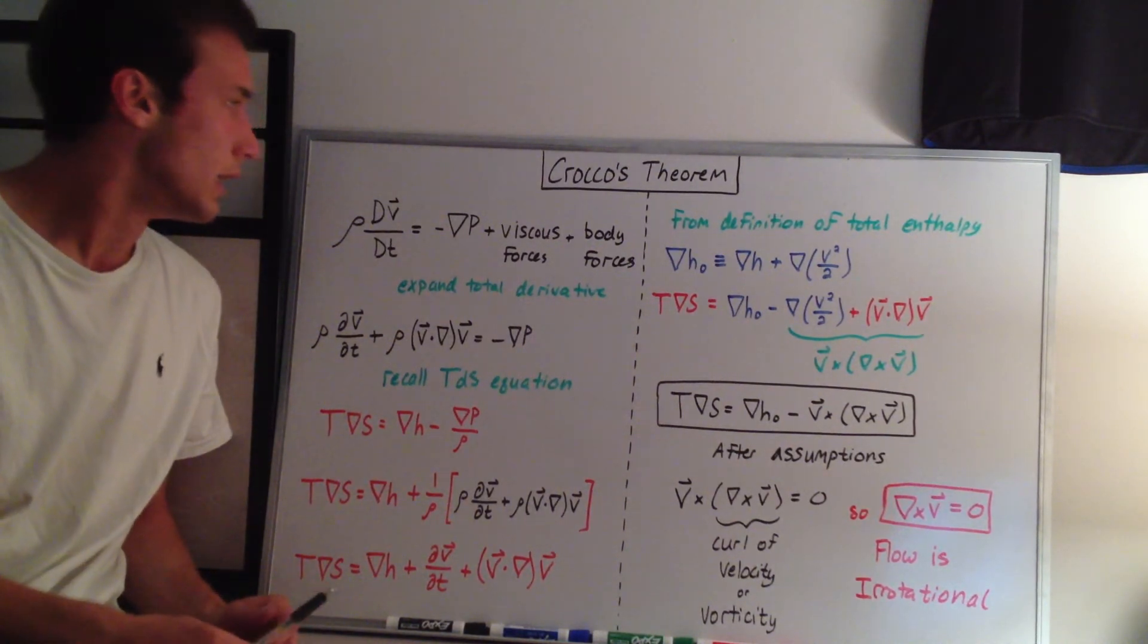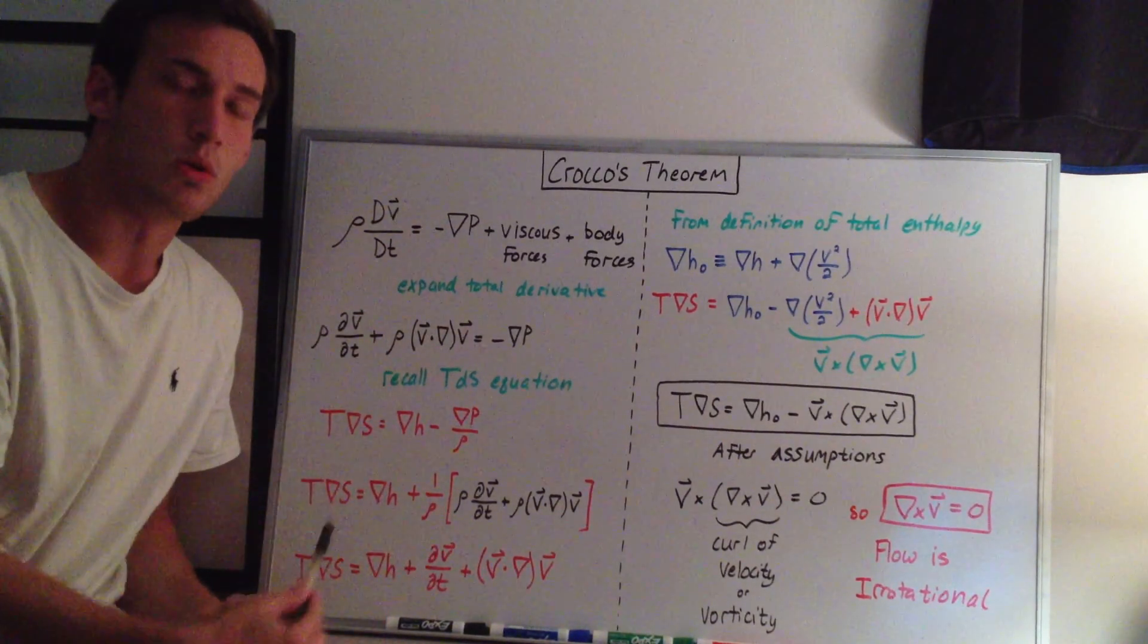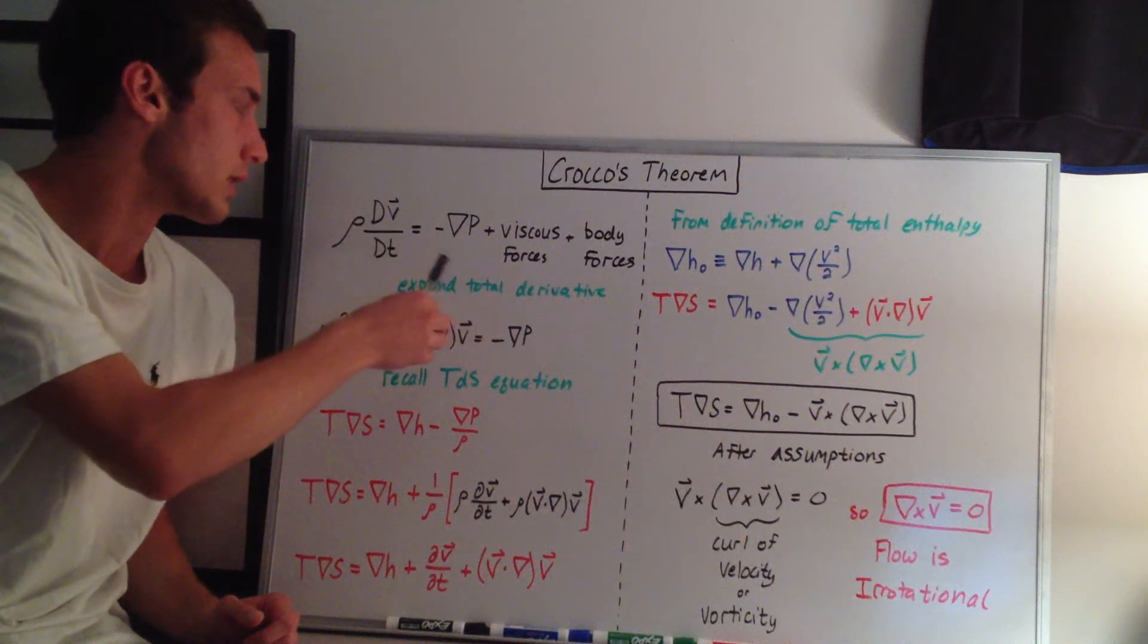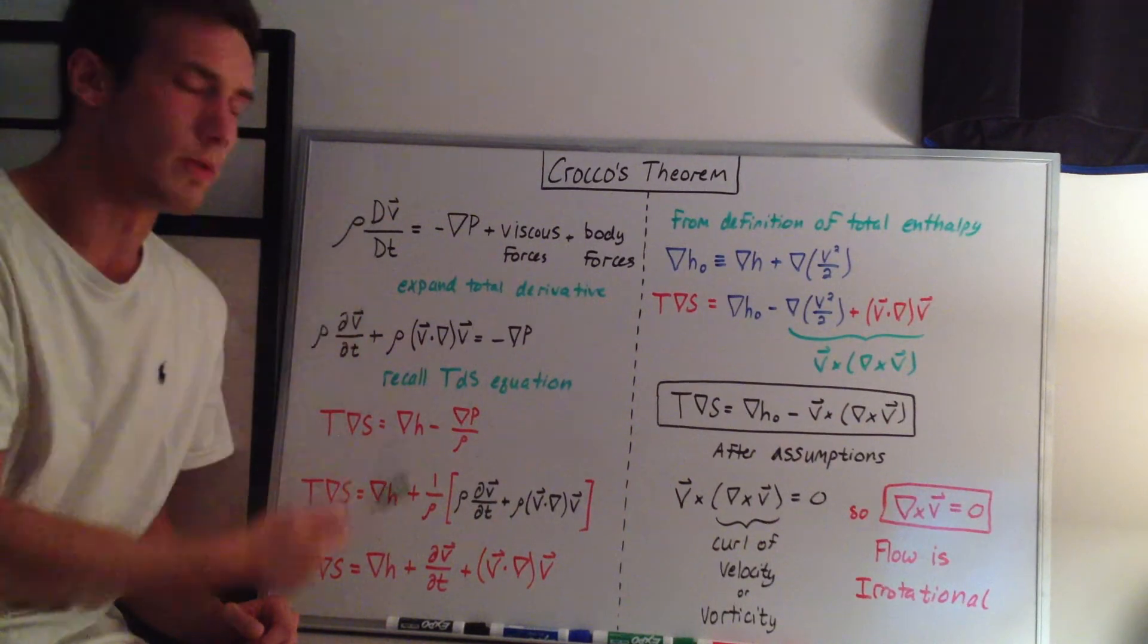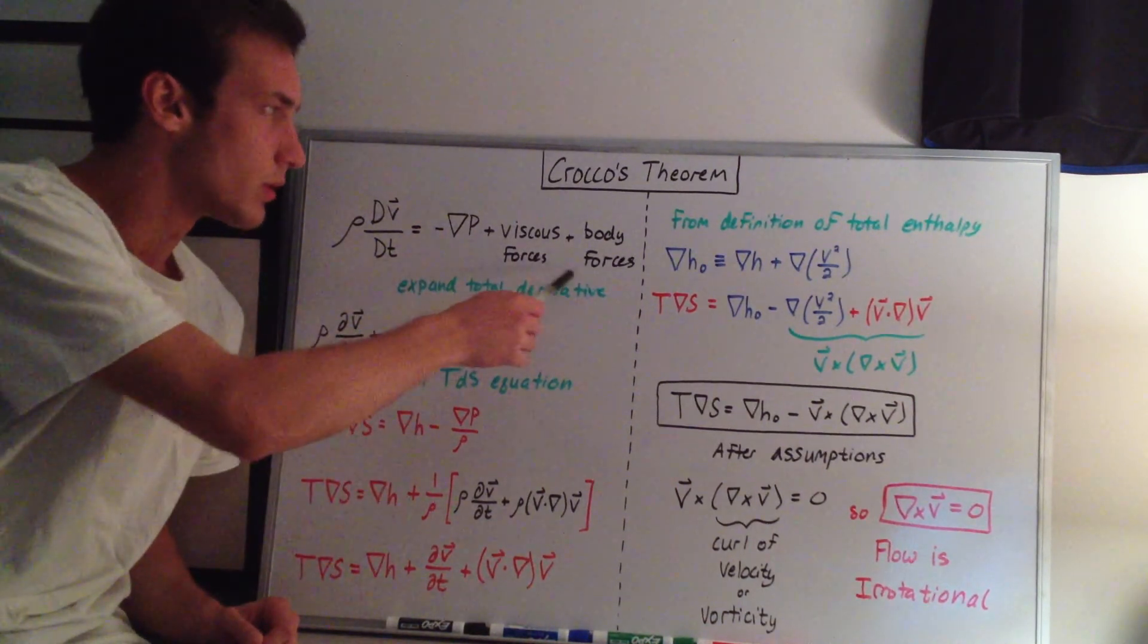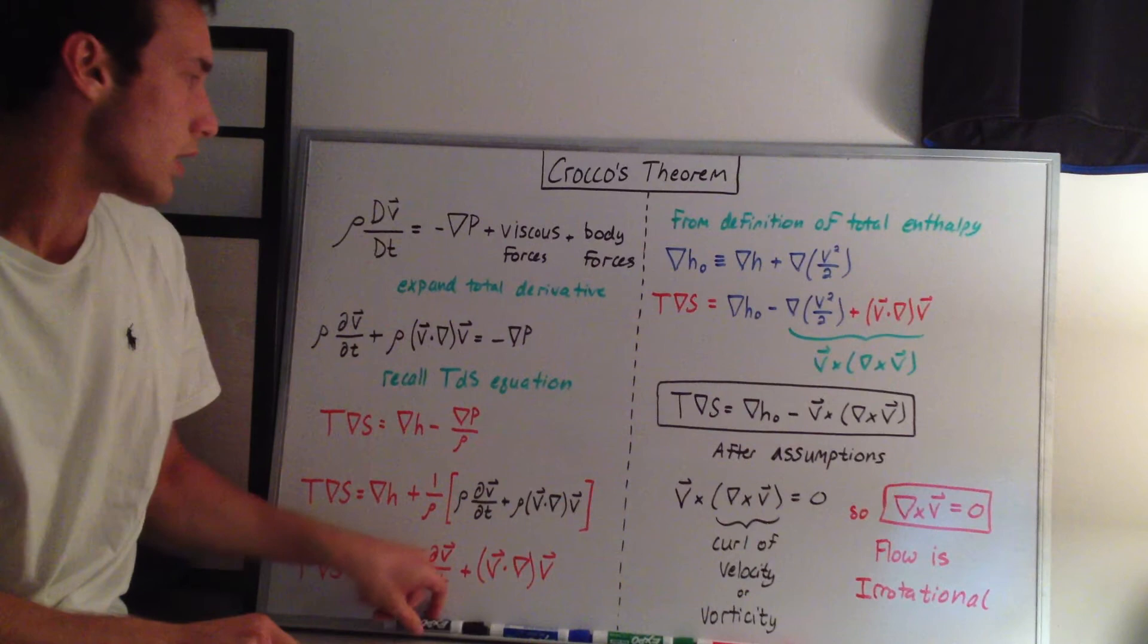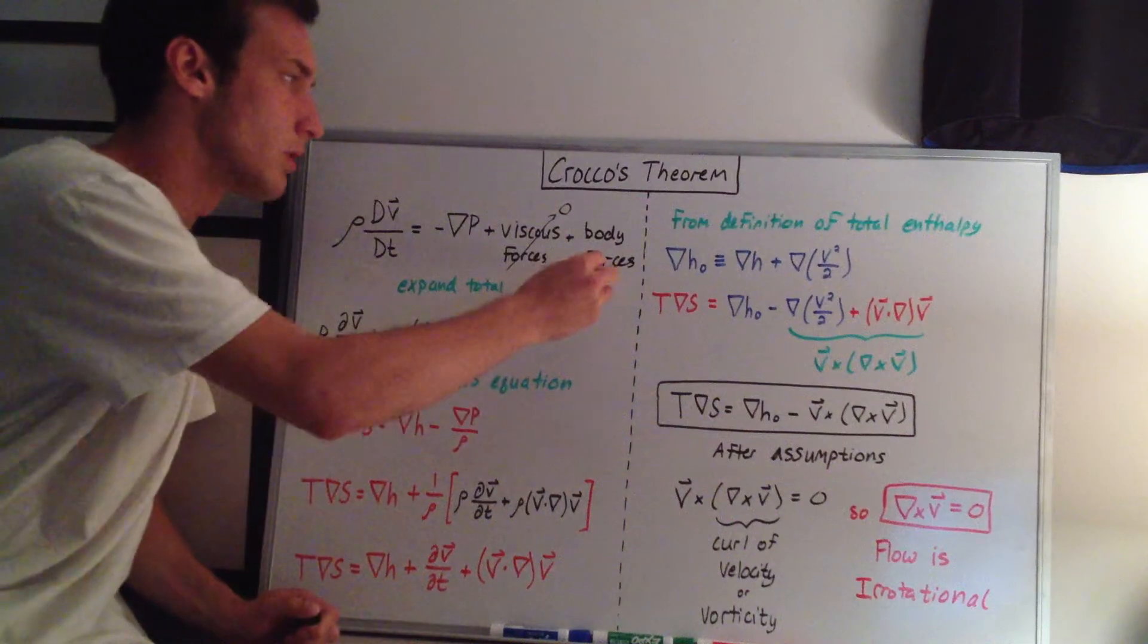Okay, so we're going to start with the momentum equation. You can go back to my momentum equation video that I'll post in the description to see how I derive this equation. But reworking in vector form, we have the density times the total derivative of the velocity with respect to time equal to the negative of the gradient of the pressure plus viscous forces plus body forces. From the assumption video, we can assume that the viscous forces are zero, which means we have an inviscid flow, and we also neglect the body forces, so that's also zero.